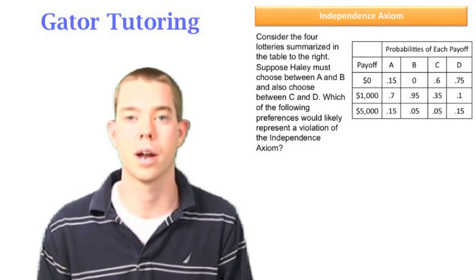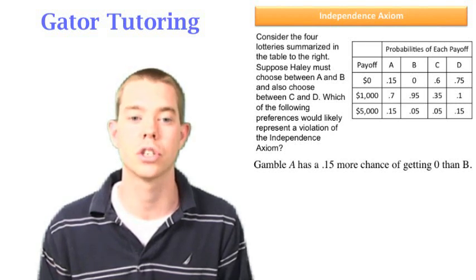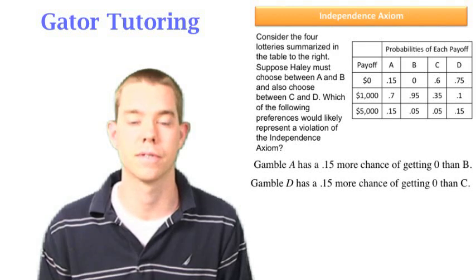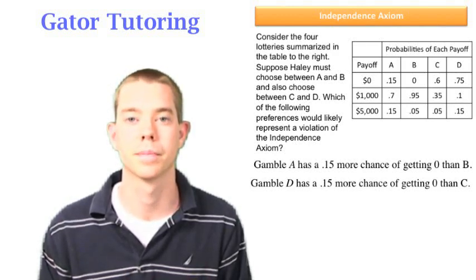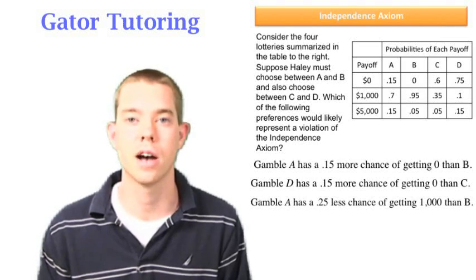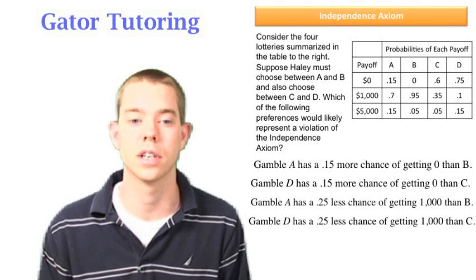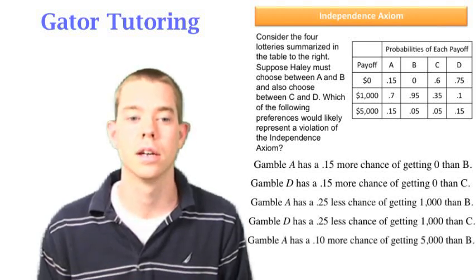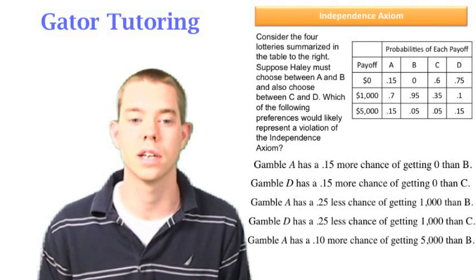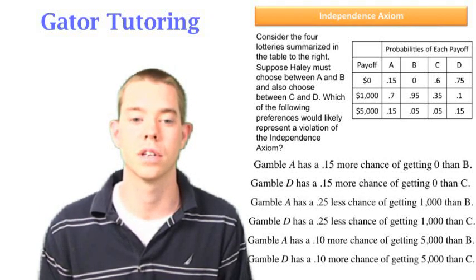So let's take a look at how that applies here. We see that gamble A has a 15% more chance of getting zero than gamble B. Well, gamble D also has a 15% more chance of getting zero than gamble C. Gamble A has a 25% less chance of getting 1000 than B. Well, gamble D also has a 25% less chance of getting 1000 than C. Gamble A has a 10% more chance of getting 5000 than B. And gamble D has a 10% more chance of getting 5000 than C.